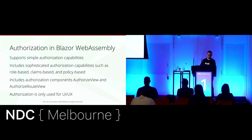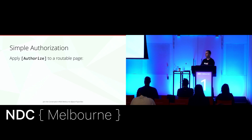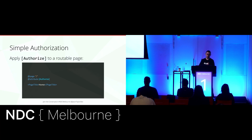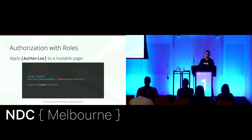Let's have a look at some examples with Blazor. For simple authorization, we can use the authorize attribute on a routable page. Here we've simply applied the attribute, which means only authenticated users can access the home page. The authorize attribute can also specify two roles, so an authenticated user who is either a member of administrators or the accounts role. And here, we've specified the employees-only policy, so only an authenticated user who meets those requirements can access the users page.